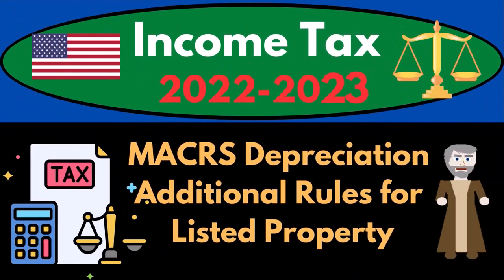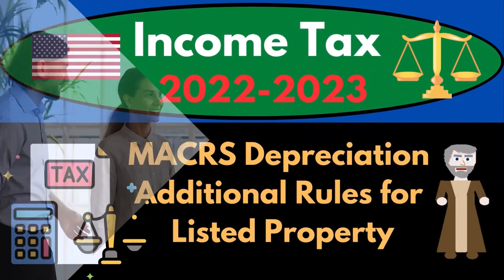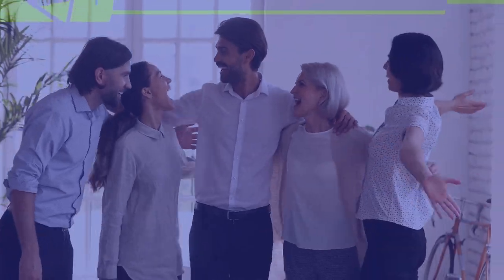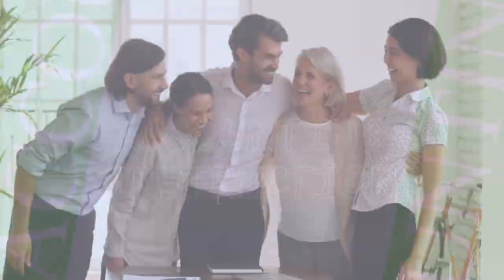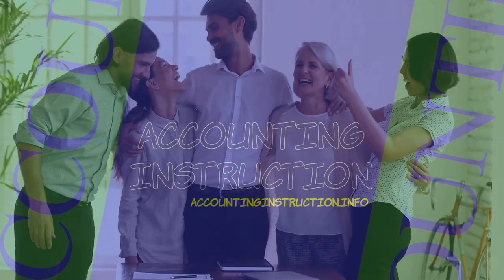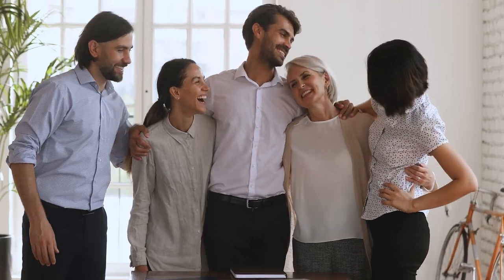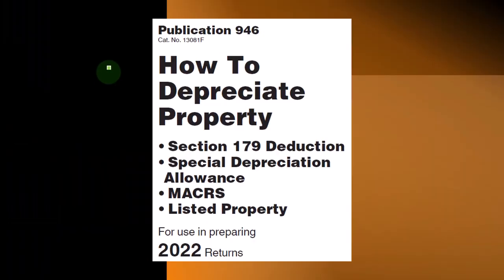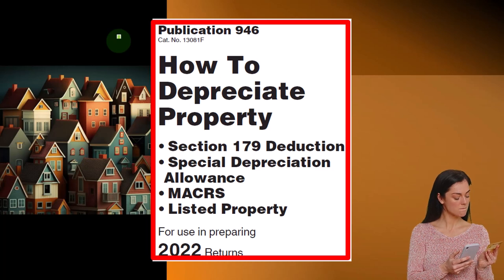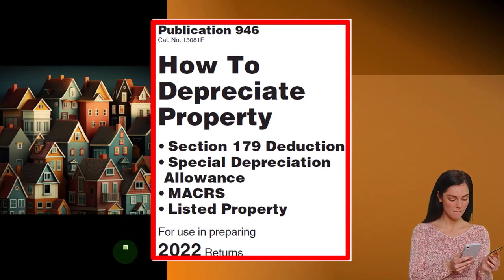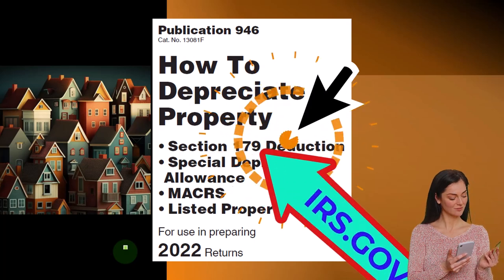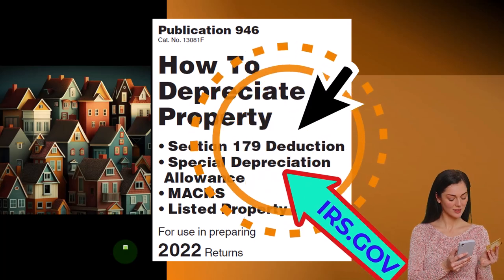Income Tax 2022-2023, MACRS Depreciation, Additional Rules for Listed Property. Let's do some wealth preservation with some tax preparation. Most of this information comes from Publication 946, How to Depreciate Property, Tax Year 2022. You can find it on the IRS website, irs.gov.